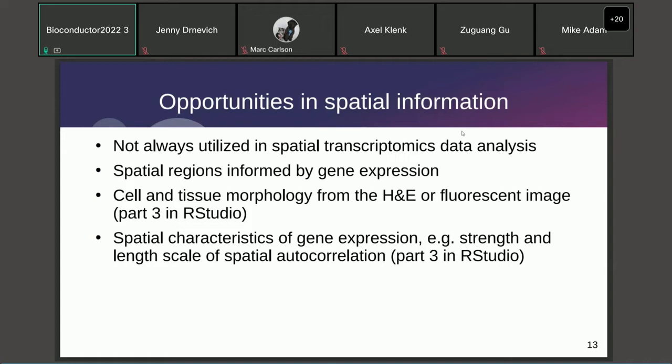Among the opportunities: we can use gene expression to find spatial regions, and there are already many packages doing that, like BayesSpace and Giotto. In this workshop, we'll explore how cell and tissue morphology from the H&E image can relate to gene expression, and also explore the spatial characteristics of gene expression, like the strength and length scale of spatial autocorrelation.